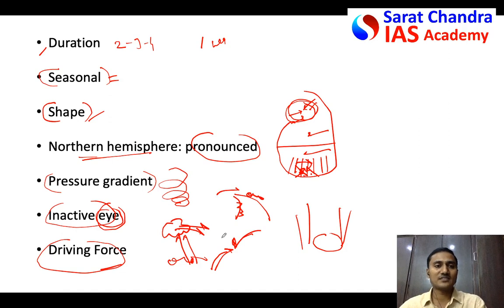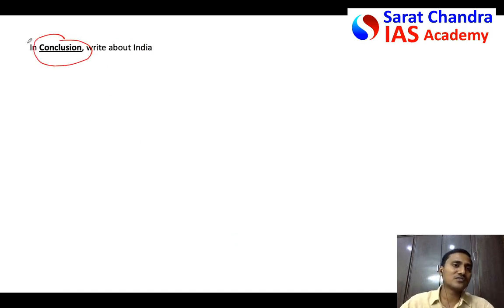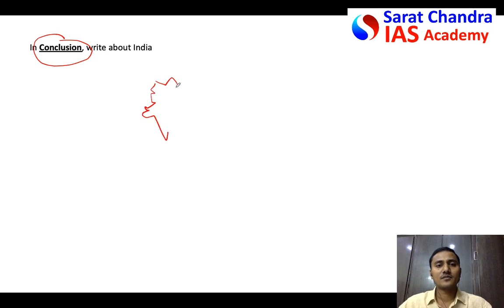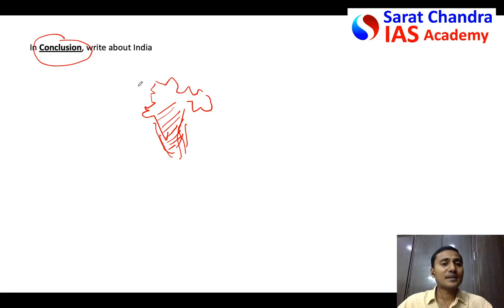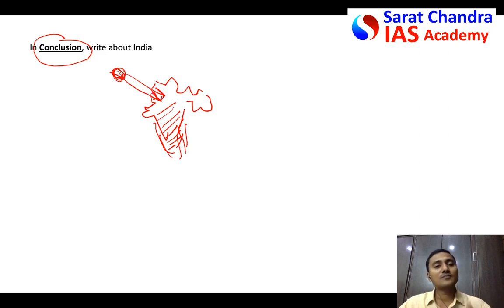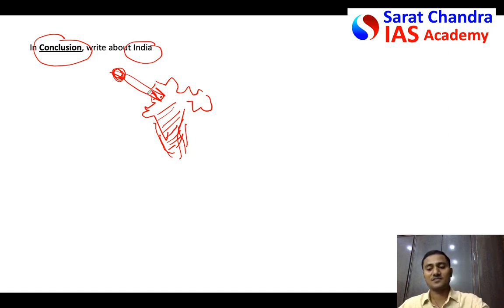In the conclusion, write about India. In India, tropical cyclones occur along the coastal areas. Temperate cyclones generally do not occur in India directly, but temperate cyclones from the Mediterranean Sea are brought to India by jet streams during the winter season — causing winter rainfall in Punjab, Haryana, and parts of eastern UP. So India observes both tropical and temperate cyclones.